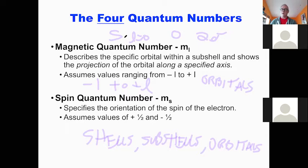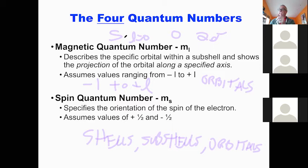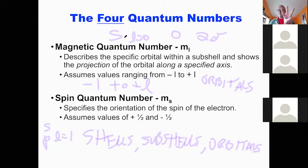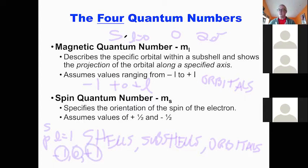The next subshell after S is P, where L equals one. In a P subshell we can find electrons in three places — M sub L can be minus one, zero, or plus one — so there are three orbitals. After P comes D, where L equals two. How many places in a D sub-level? We start at minus two, minus one, zero, plus one, plus two — that's five places.